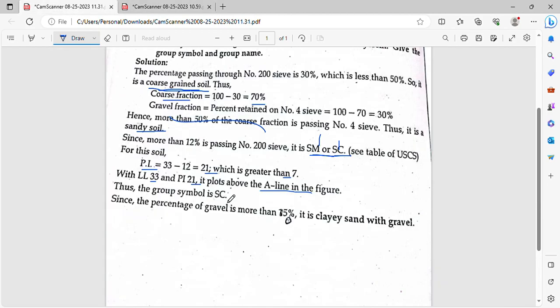The group symbol is SC, sand with clay. The suffix C is in the prefix. We have the group symbol and group name.